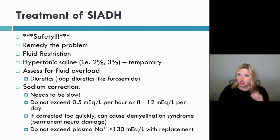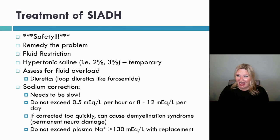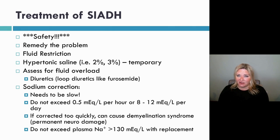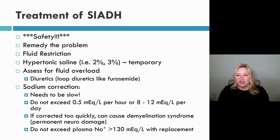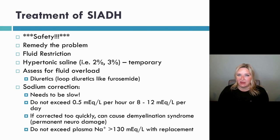You want to correct super slow. Do not correct sodium quickly — usually no more than 8 to 12 milliequivalents per day. If correction is done too quickly, patients can develop demyelination syndrome, where they have permanent nerve damage. So it's really important to correct super slowly — about half a milliequivalent per liter per hour, or 8 to 12 milliequivalents per liter per day maximum.